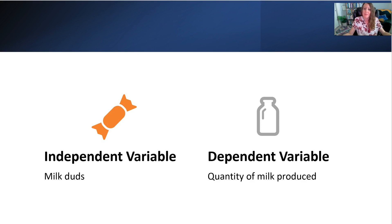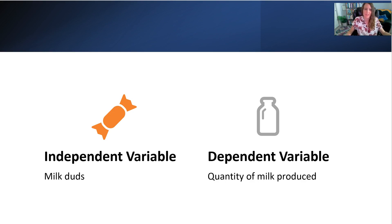The independent variable here would be the Milk Dud — the intervention we're applying. The dependent variable is the quantity of milk produced — for example, how many cups of milk a cow produces in a day. I'm no farmer, but I assume there are factors that would certainly impact dairy cow production.